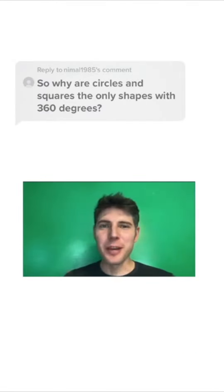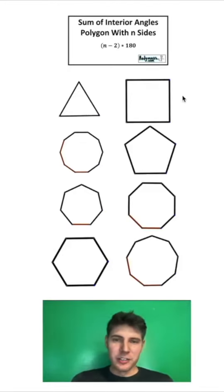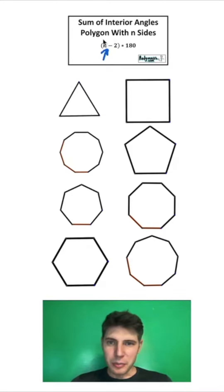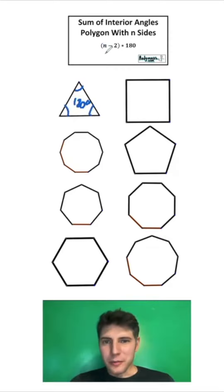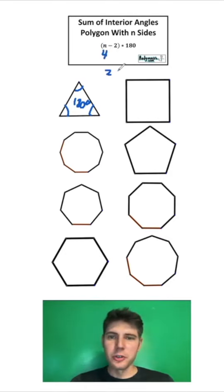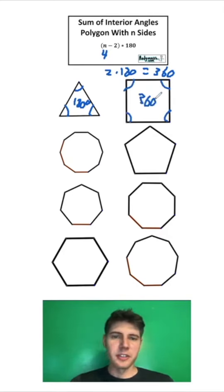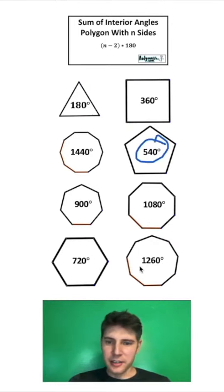Why are circles and squares the only shapes with 360 degrees? This is a great question. If you have a polygon and N is the number of sides, you can find the total number of degrees inside that polygon. For triangles, plug in 3: 3 minus 2 is 1, and 1 times 180 tells us these three angles add up to 180 degrees. For a square, plug in 4: 4 minus 2 is 2, and 2 times 180 equals 360. We can repeat this for all polygons: a pentagon is 540, a hexagon is 720, an octagon is 1080.